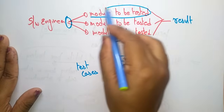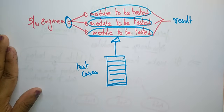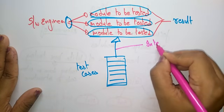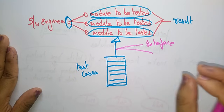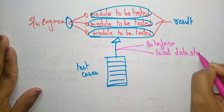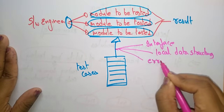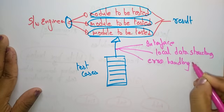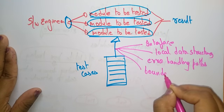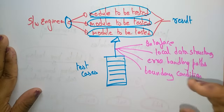For each module, test cases are applied. The test cases cover: interfaces, local data structures, error handling paths, and boundary conditions.